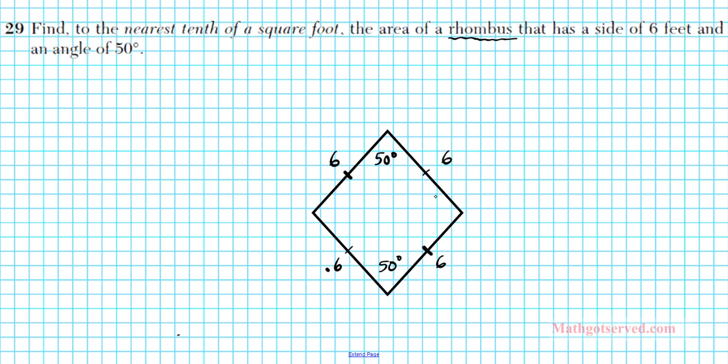This angle right here is 50 degrees. What we're going to do now is basically split our rhombus into two congruent triangles. How do we know that these two triangles are congruent? Using the SAS congruency postulate, side angle side, we know that these two triangles are congruent. Anytime you have an SAS triangle and you want to find the area, there is a unique formula that can be used to quickly compute the area of that triangle.